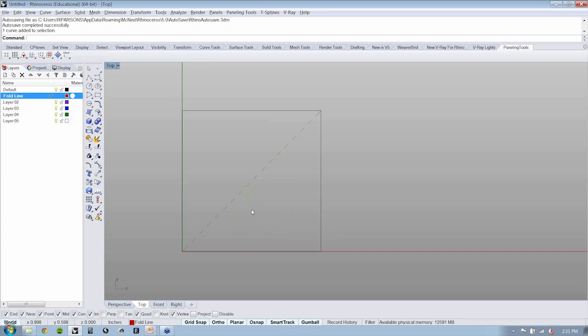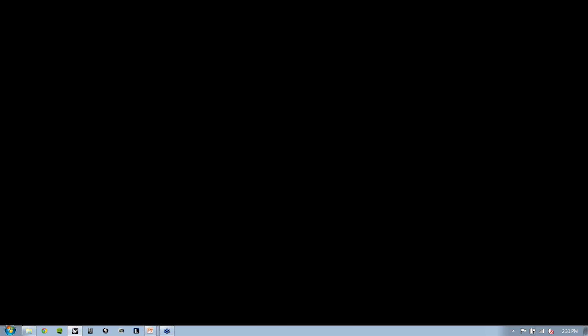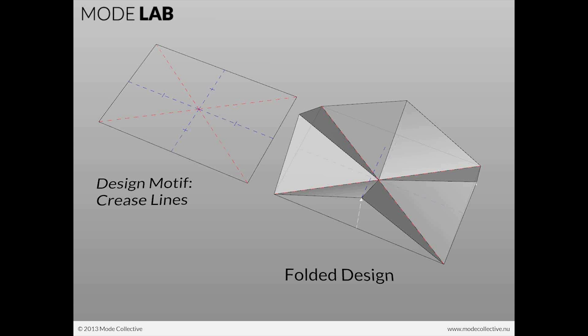If I want to have greater flexibility in terms of the folding, I would go ahead and just mirror this. Now you can see by adding in another line here, we have now two axes of folding. We want to increase the amount of folding axes so that we can ultimately increase the amount of flexibility that the folded design will have.